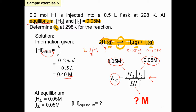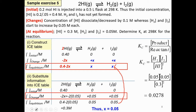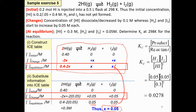Build the ICE table and substitute the values. We know that X equals 0.05 at equilibrium for hydrogen and iodine. So we can calculate the concentration of hydrogen iodide at equilibrium. After finding all equilibrium concentrations, substitute them into the Kc expression. Start from the Kc expression — step 1, step 2, step 3 — products over reactants.